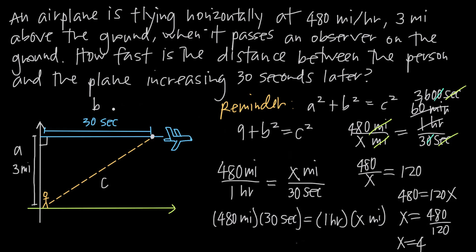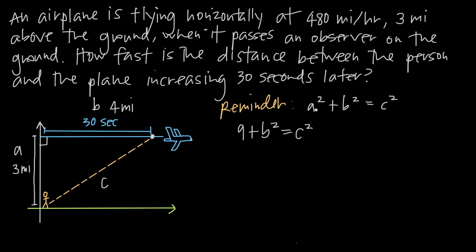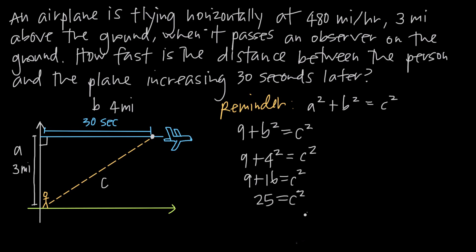Instead of saying 30 seconds, we can change this distance to 4 miles. So we know the height of the triangle is 3 miles and the length of this side is 4 miles. We can find the hypotenuse — the distance between the observer and the airplane at 30 seconds. We already said A equals 3, giving us 9. Now B equals 4, so 9 plus 4 squared equals C squared. 9 plus 16 is 25, so C squared equals 25, and taking the square root, C equals 5.